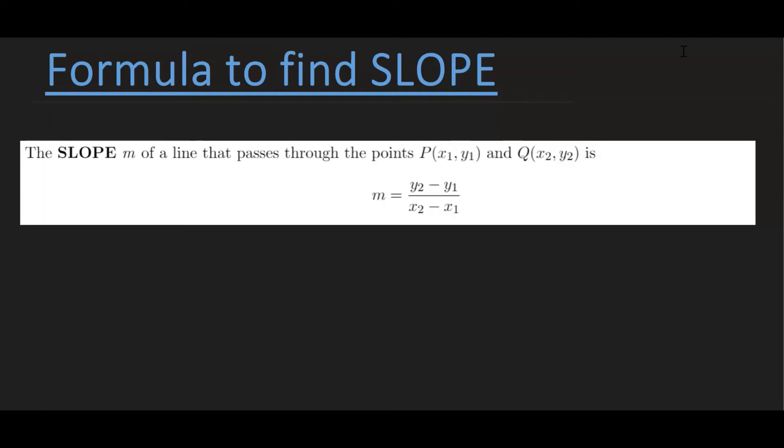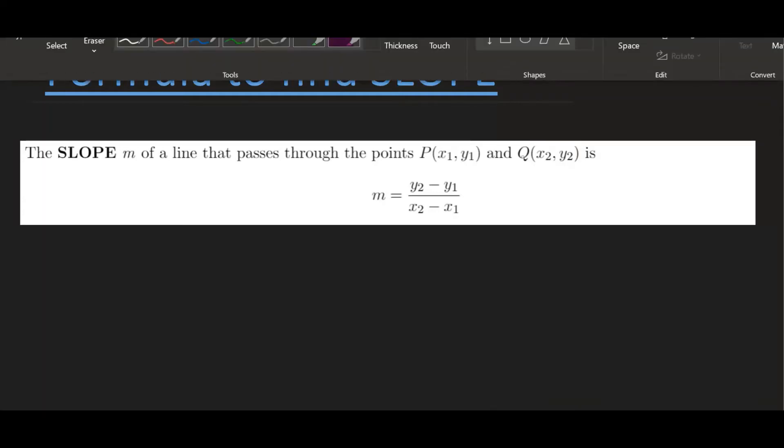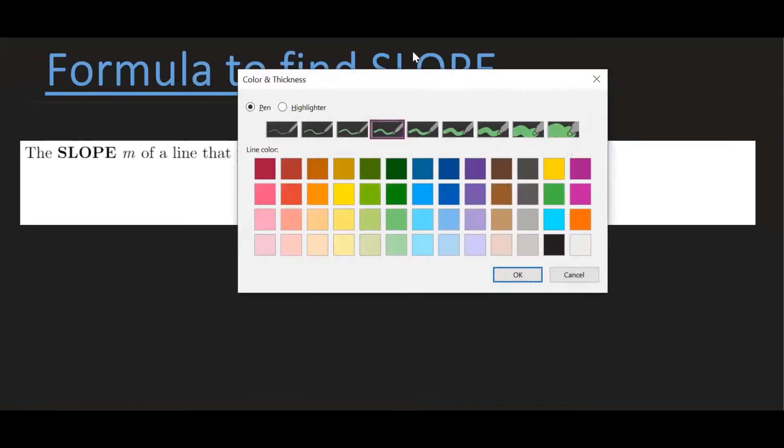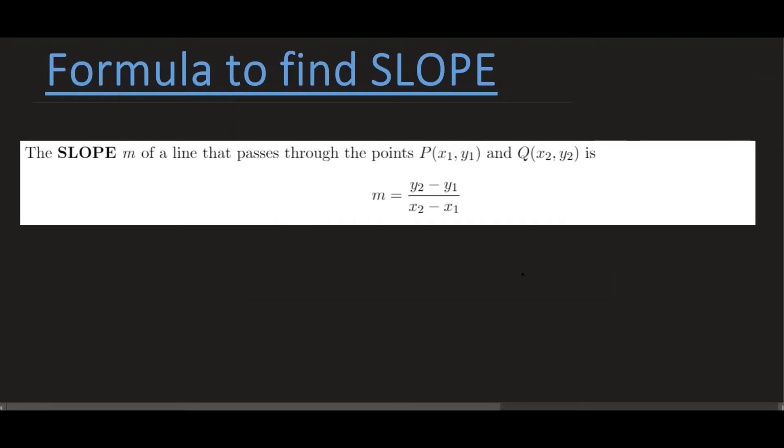Or graphically, if you're reading the slope from a graph, you can also use the fact that it is rise over run. Or you can also think of it as it is the change in the y coordinate over change in the x coordinate. So these are different ways you can remember the formula to find a slope.